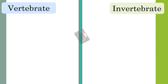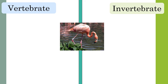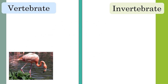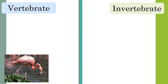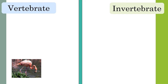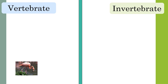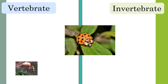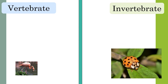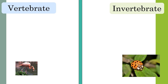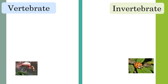Which group does a flamingo belong to? A flamingo is a type of bird and all birds have backbones, so it belongs to the vertebrate group. What about this ladybird? A ladybird is a type of insect and has an exoskeleton, so it belongs to the invertebrate group.